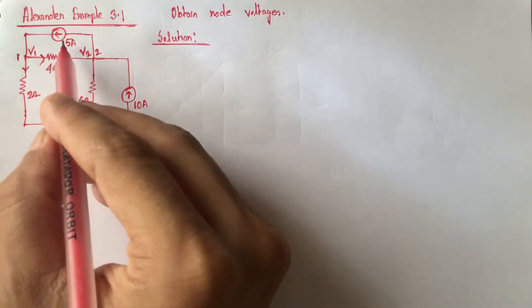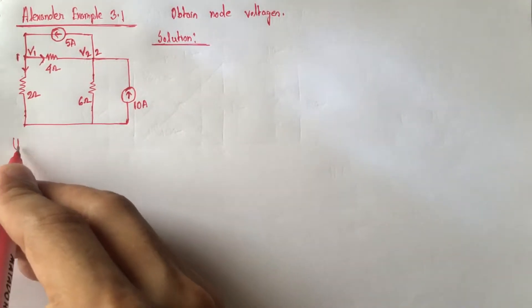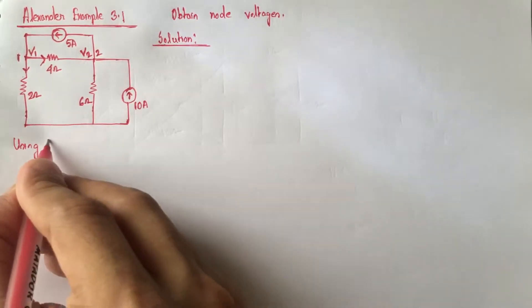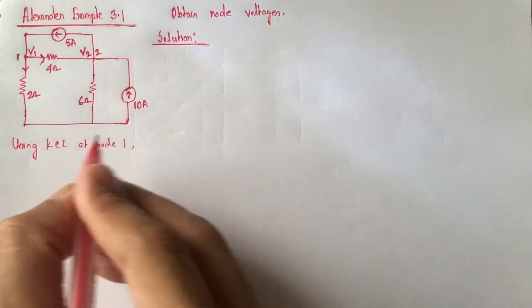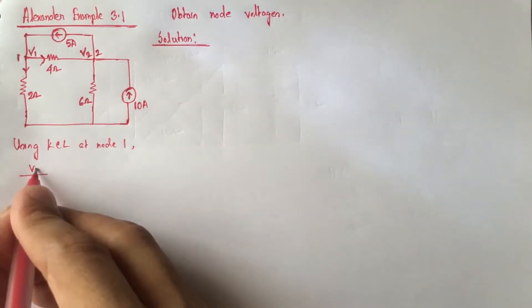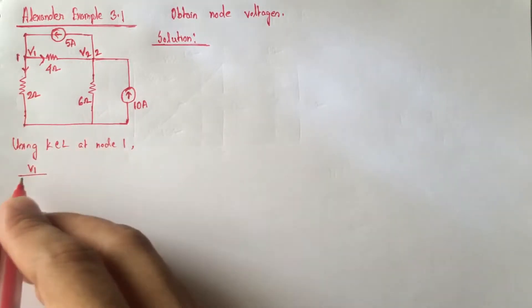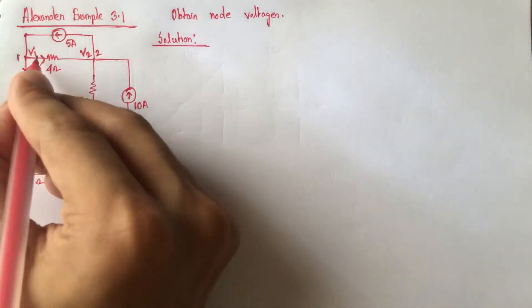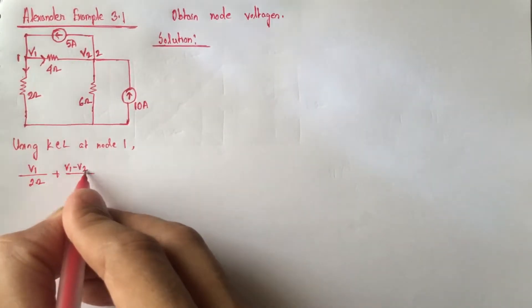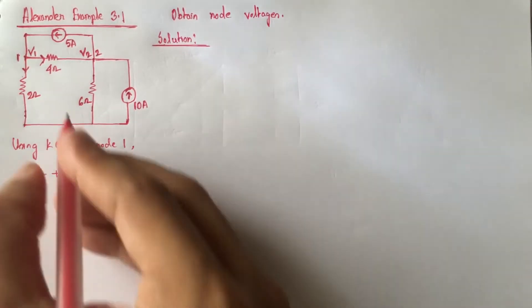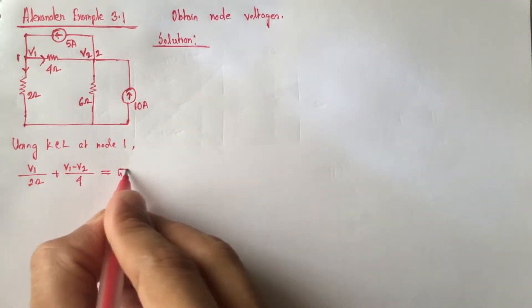Now using KCL at node 1, V1 by 2 ohm plus V1 minus V2 by 4 ohm will be equal to current entering at this node, which is 5A.